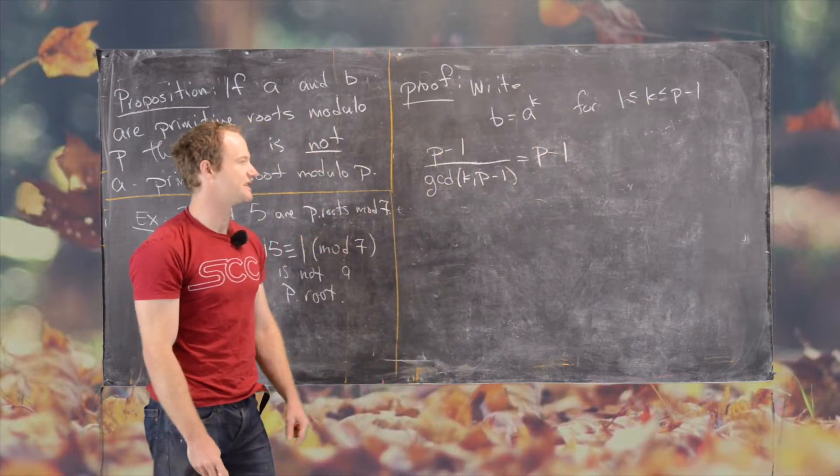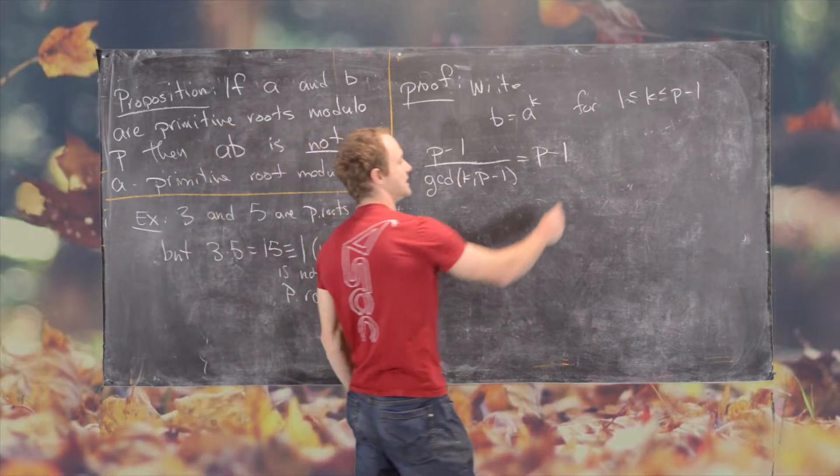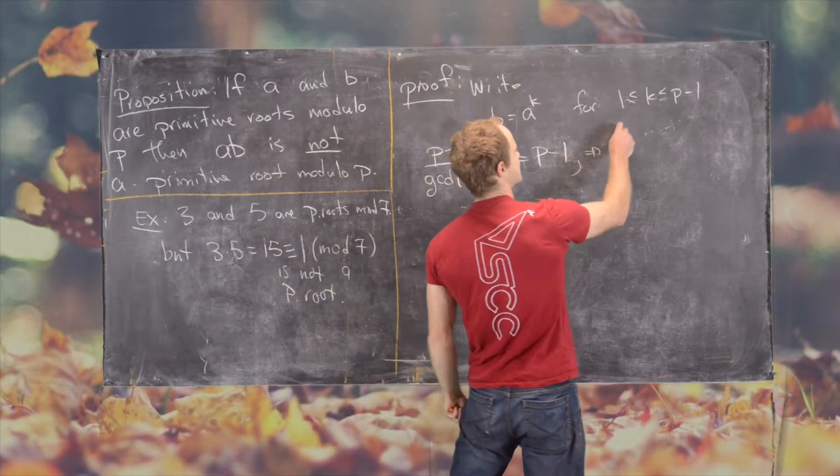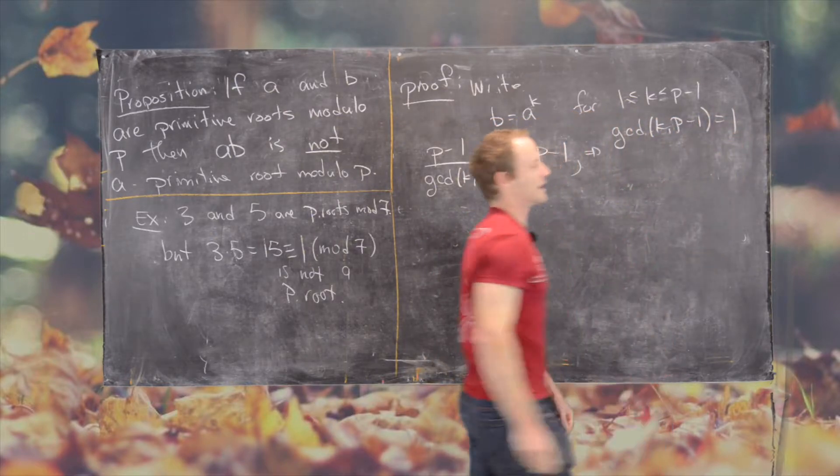P minus 1 over the GCD of K and P minus 1 equals P minus 1. So now notice that tells us that the GCD of K and P minus 1 equals 1.